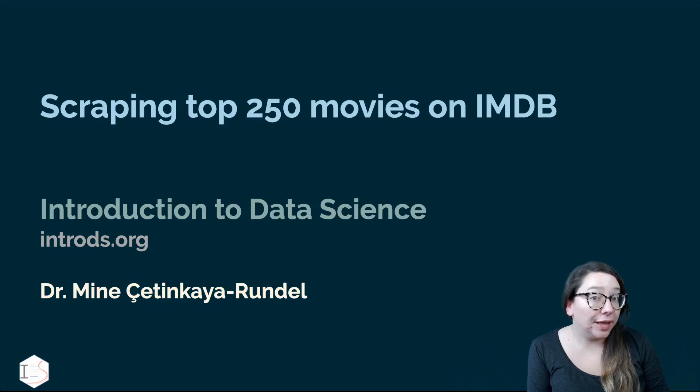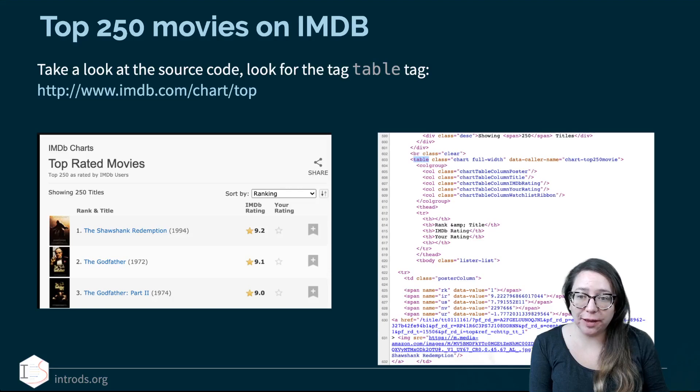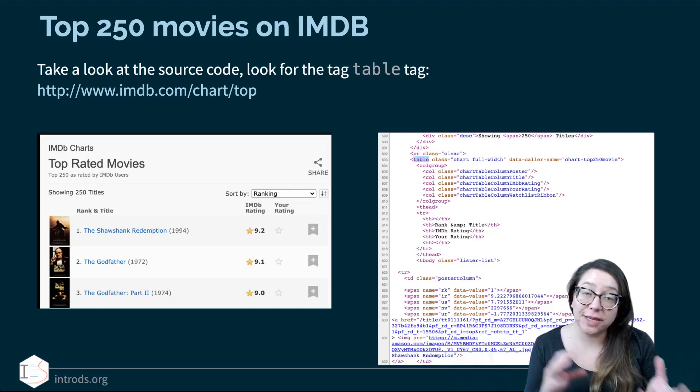In this video we're going to put what we learned in the previous video to use to scrape the top 250 movies from IMDb. The top 250 movies on IMDb are at a specific URL. If you'd like to follow along with this exercise, I recommend you open up your browser to that page, and you're going to see a page that looks something like this.